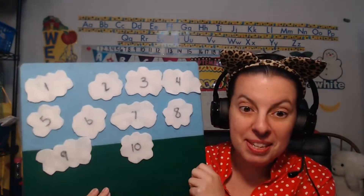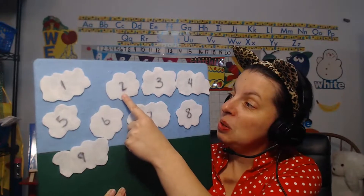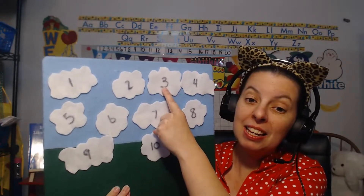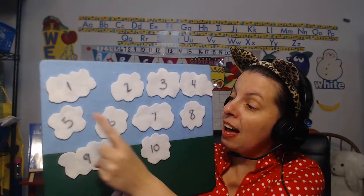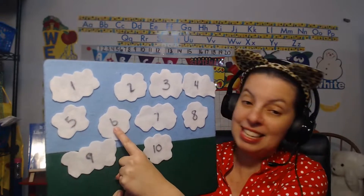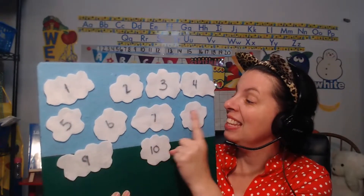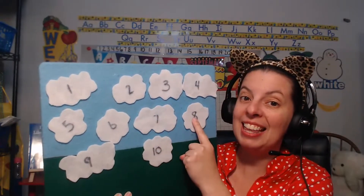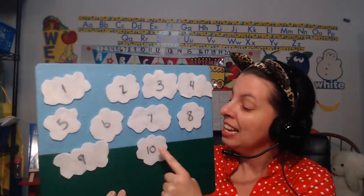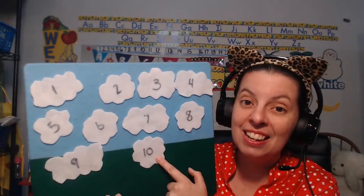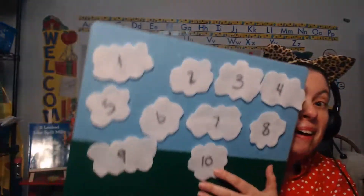Can you sing that with me? One little, two little, three little clouds. Four little, five little, six little clouds. Seven little, eight little, nine little clouds. Ten little clouds, floating high.